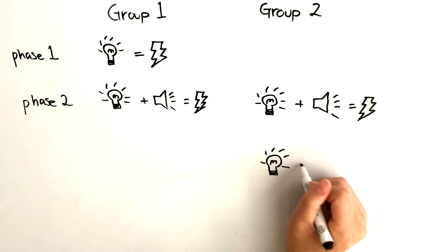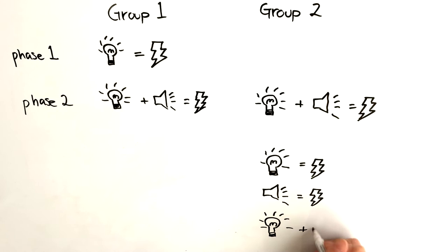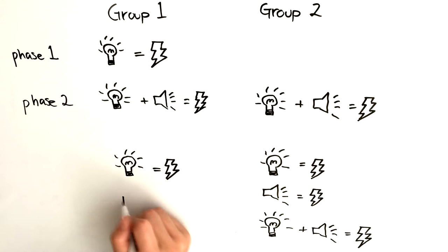So, in group two, they learned light leads to shock, tone leads to shock, or both lead to shock. Group one will expect the presence of light would bring about shock. However, when there is a tone, there would be no shock.